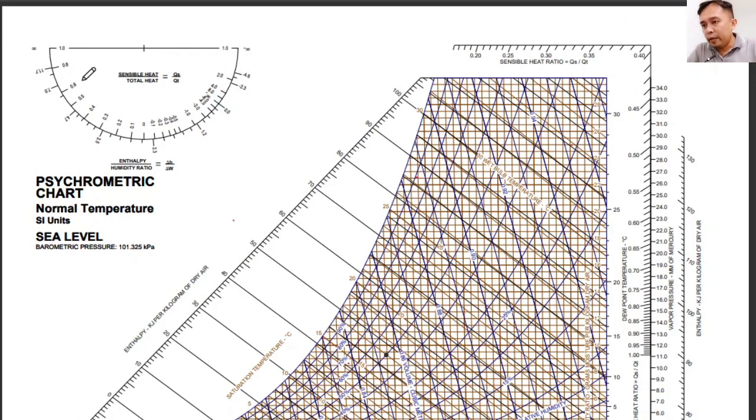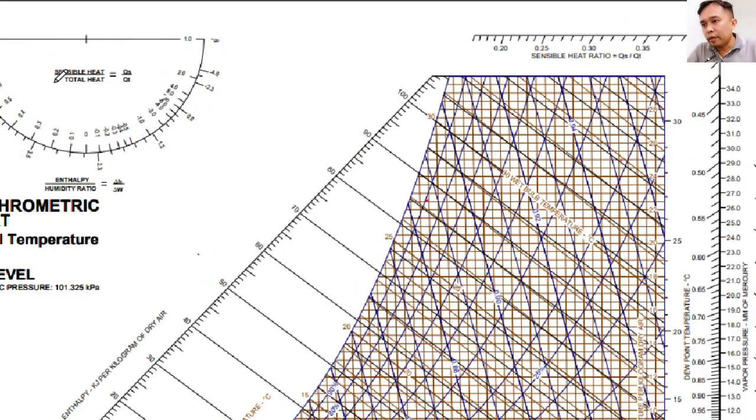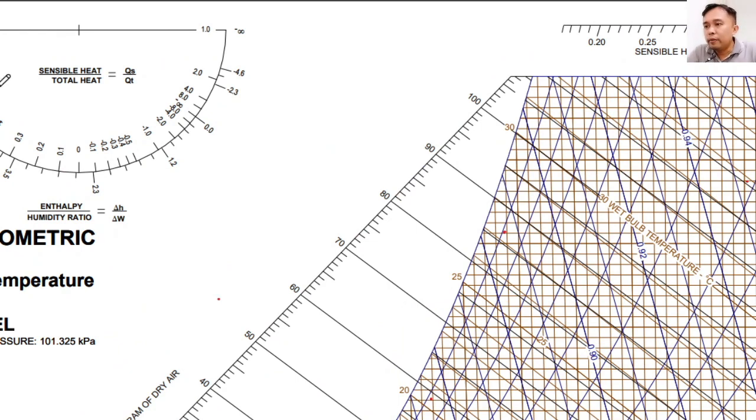In the upper left corner, we have your protractor, where you can find the sensible heat over the total heat ratio. So we have the sensible heat ratio, and the values are read from the inside. And finally, you have your enthalpy humidity ratio where the values are read from the outside of the protractor.